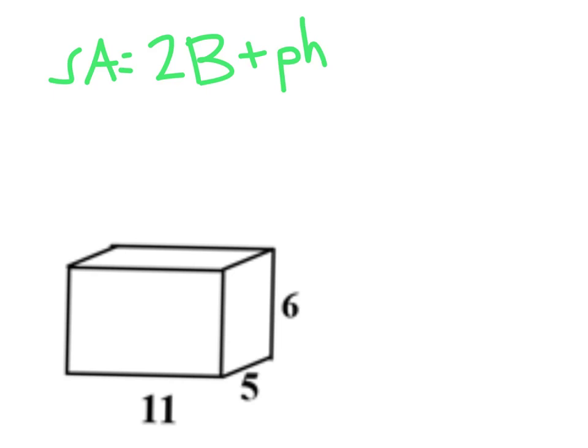Now this is a rectangular prism, so any one of these sides does have a congruent parallel side. I'm going to choose this rectangle over here that is 5 by 6. I'm going to go ahead and find the area of it and show it to you there as an area of 30.